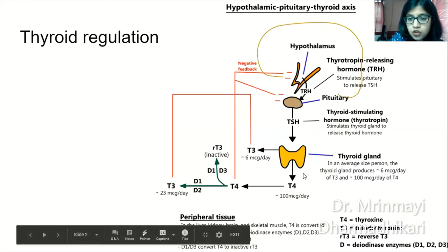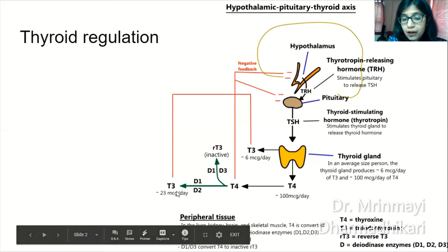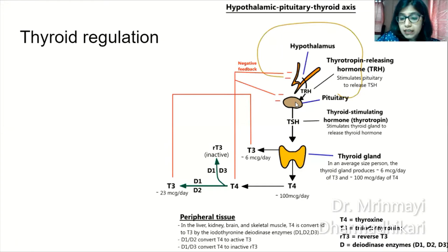80% of thyroid hormone secretion is T4 whereas only 20% is T3. T4 is a pro-hormone; it is converted in the periphery to T3, which is the active form, facilitated by the enzyme D-iodinase. T3 and T4 both have a negative feedback impact on the hypothalamus as well as the pituitary, helping in regulation of thyroid hormonal levels in the blood.